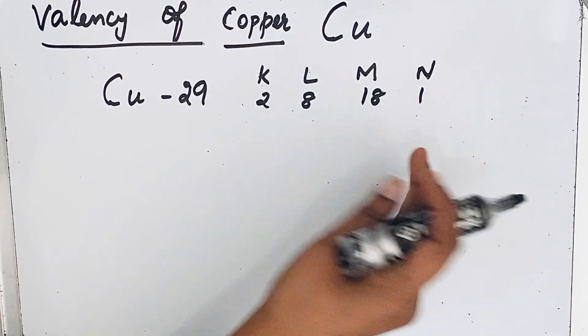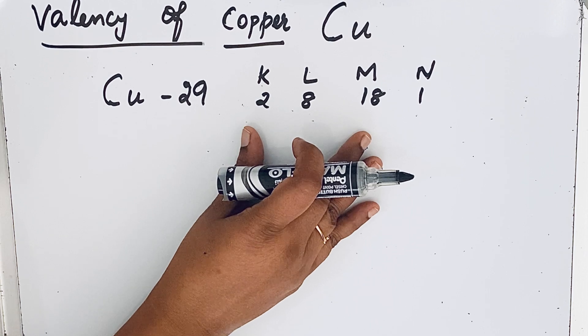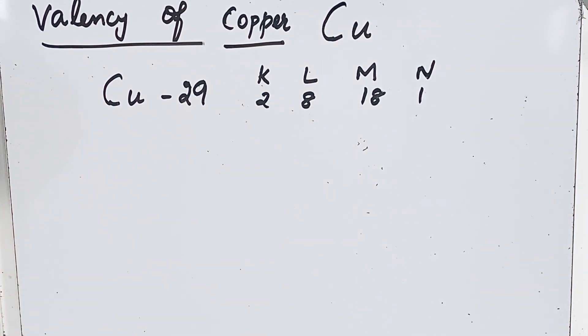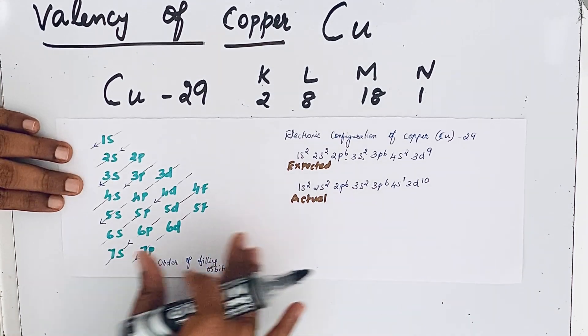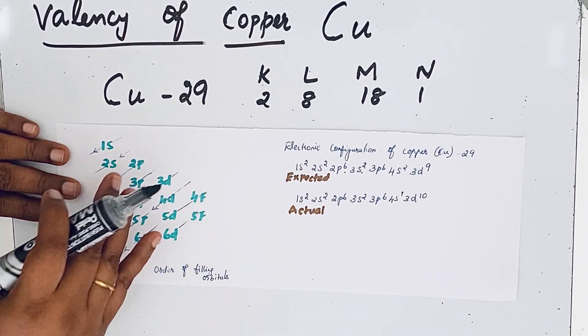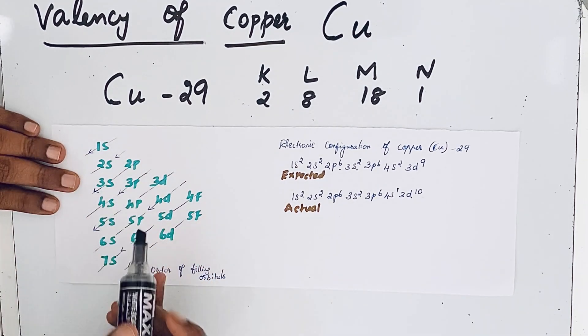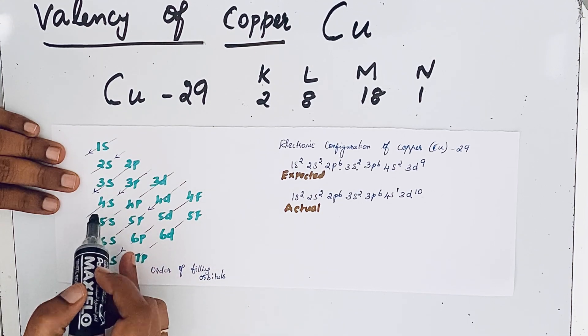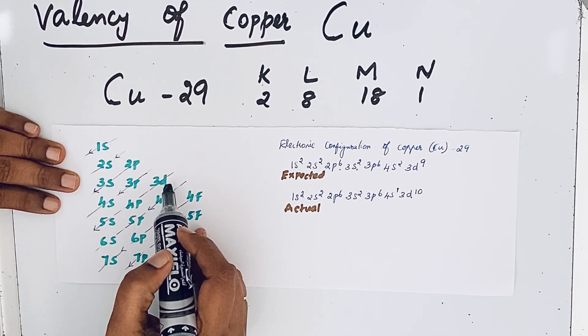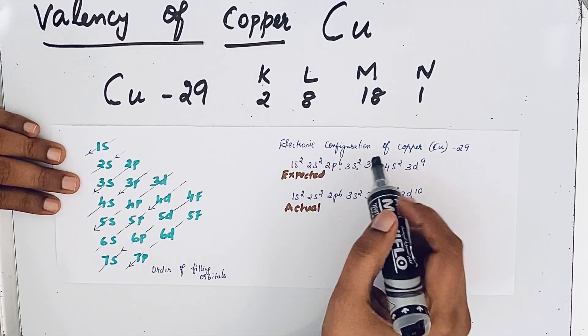We have another method of showing the electronic configuration by SPDF notation. Let us see that here. You can see the order of filling orbitals—that means the orbitals are filled based on their energy. For example, after filling the 4s orbital, then only we can fill the 3d orbitals.